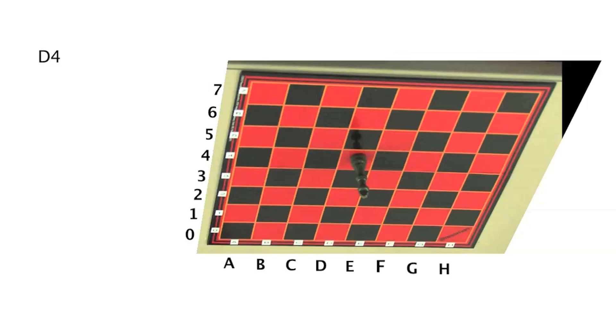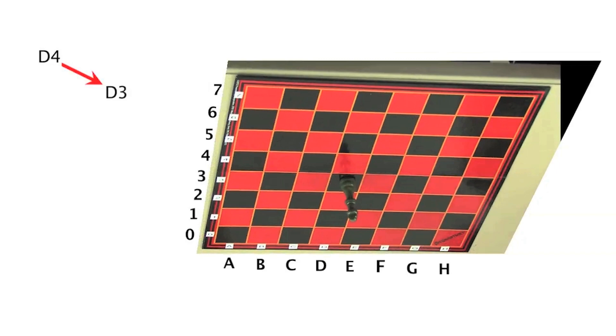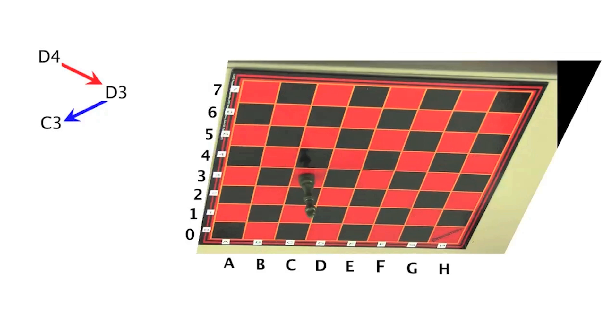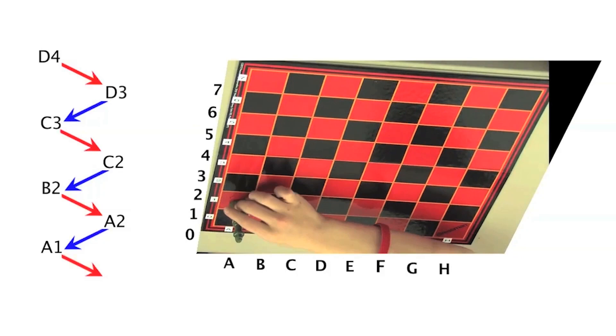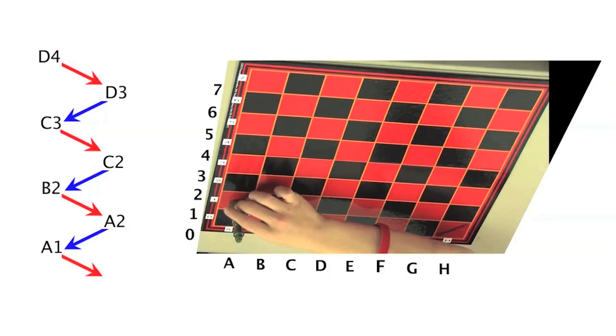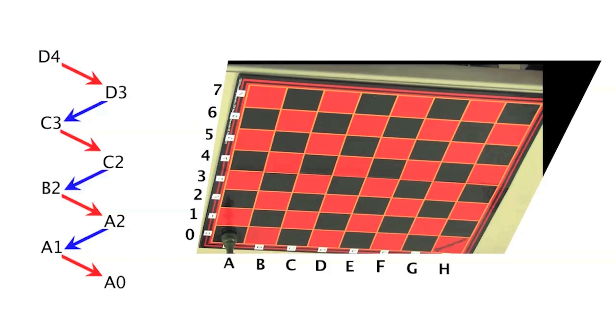In order to keep track of whose turn is next, the players wore bracelets of their respective colors. Here red makes the first move from D4 to D3. Blue then moves from D3 to C3. Then red goes to C2. Blue to B2. Red to A2. Then blue to A1 and red to A0. It's now Blue's turn, but she is unable to move. So the game is over. Red has won and blue has lost.